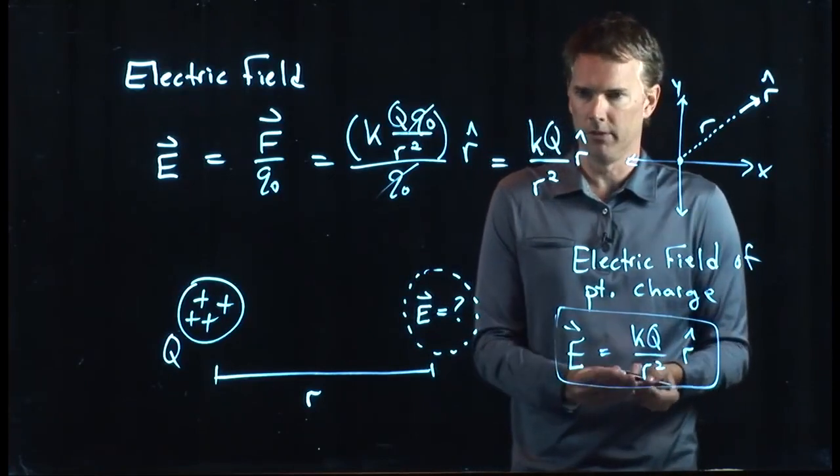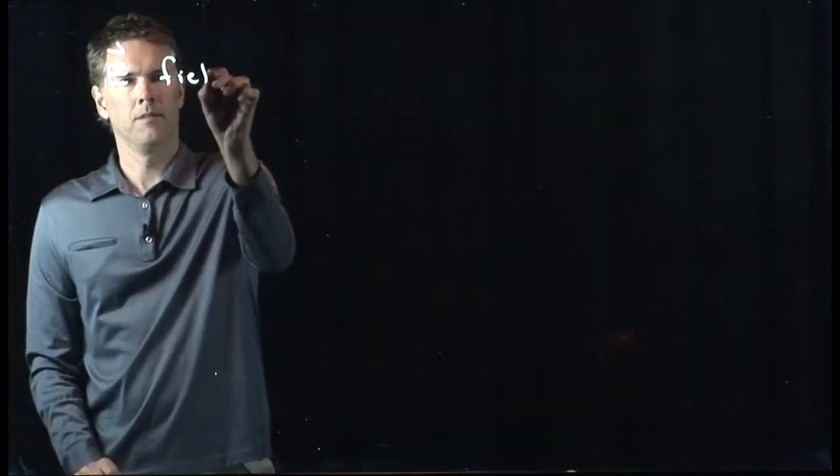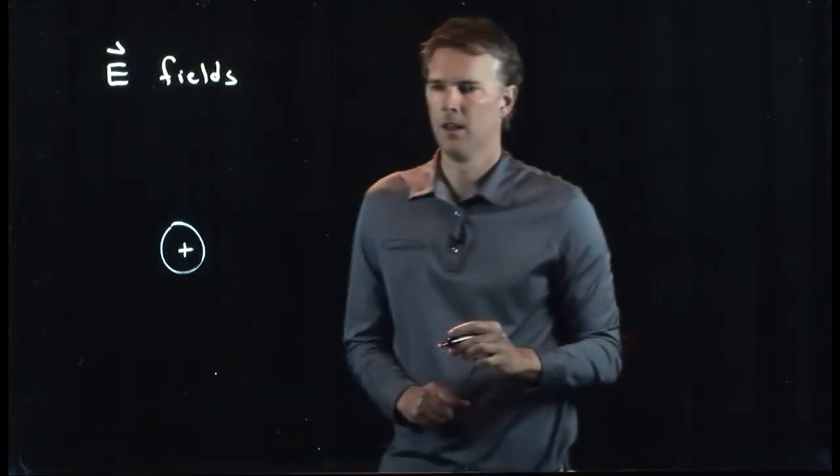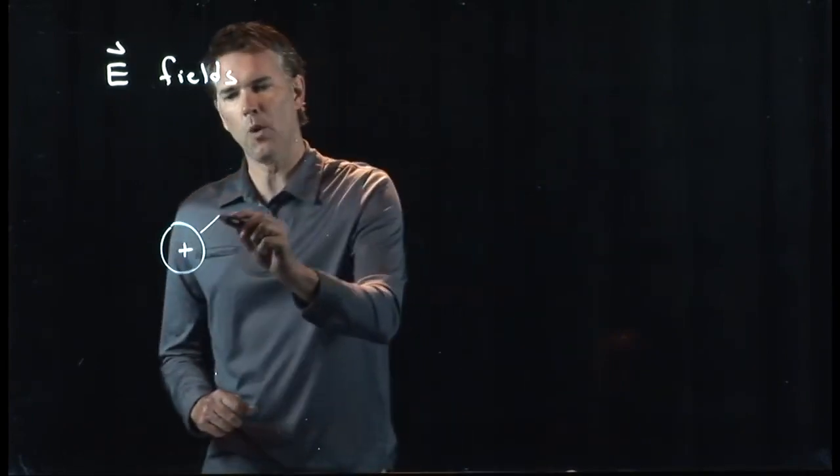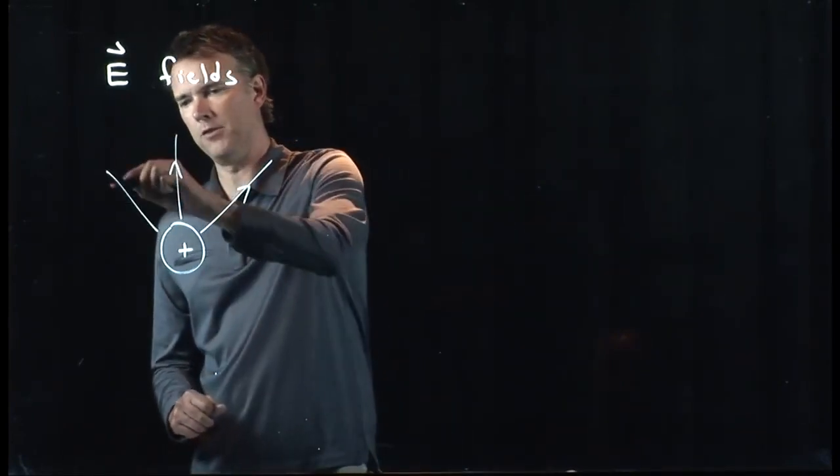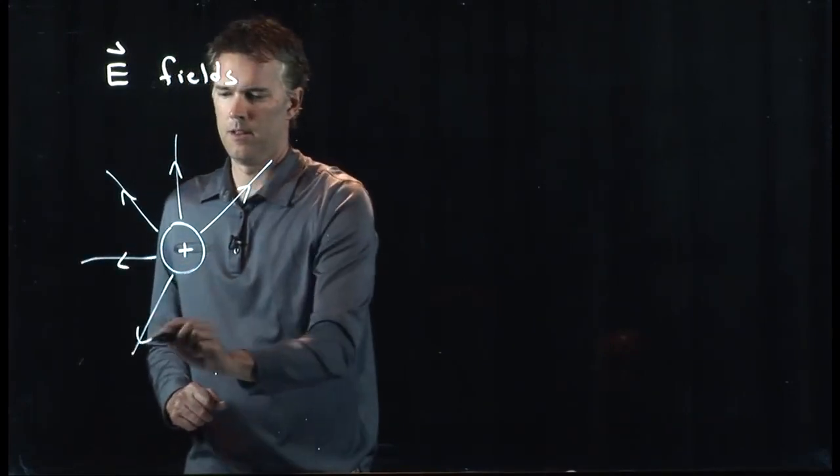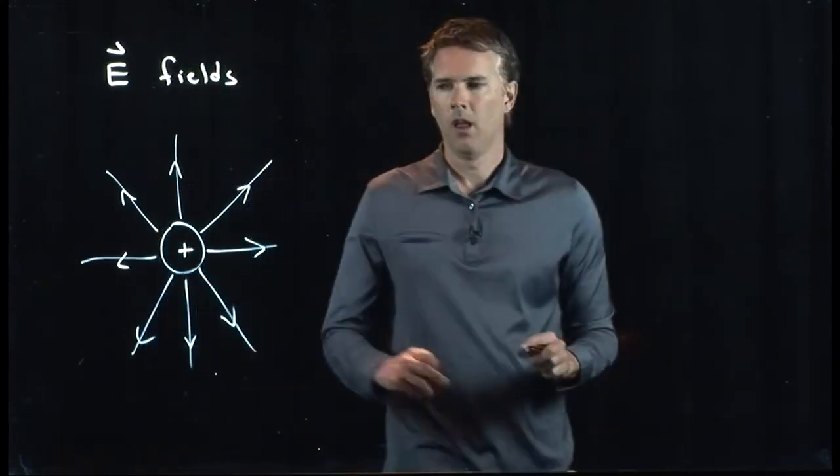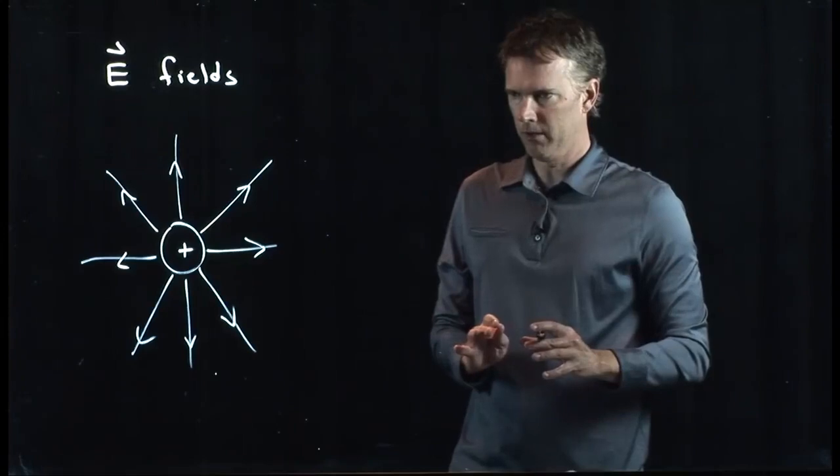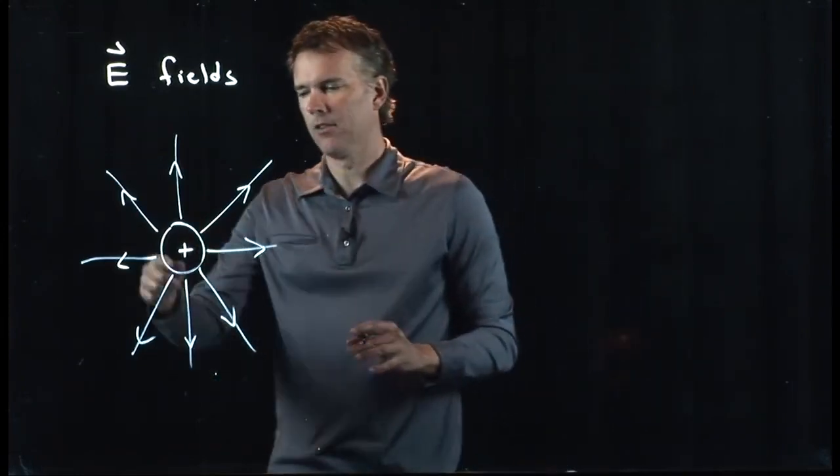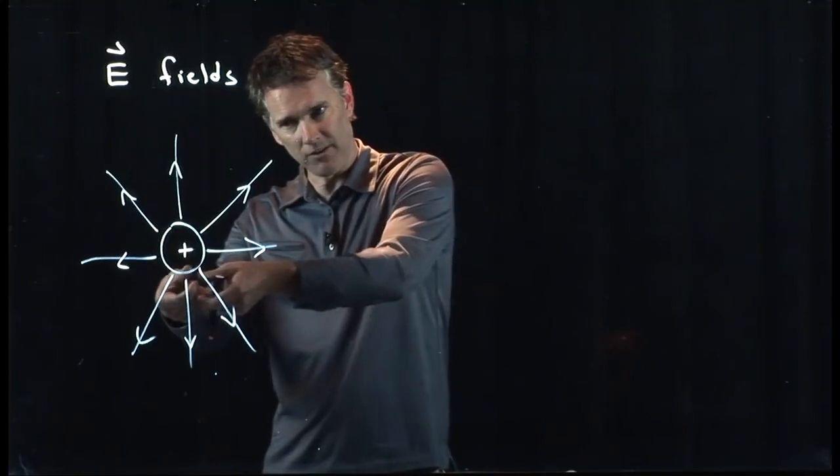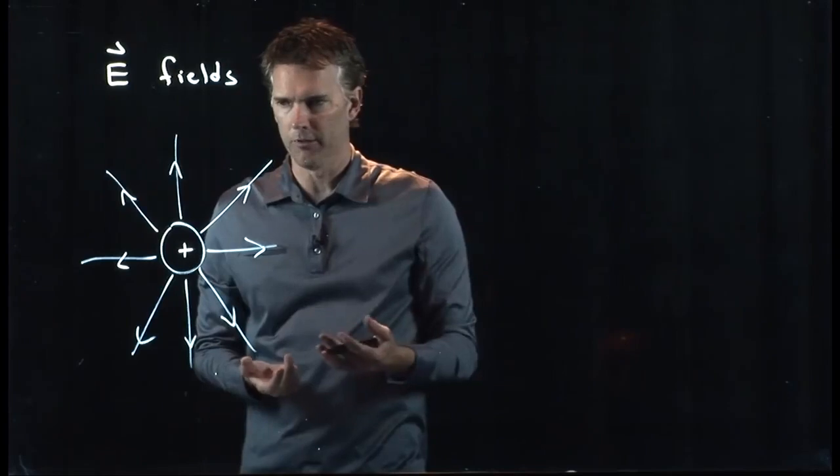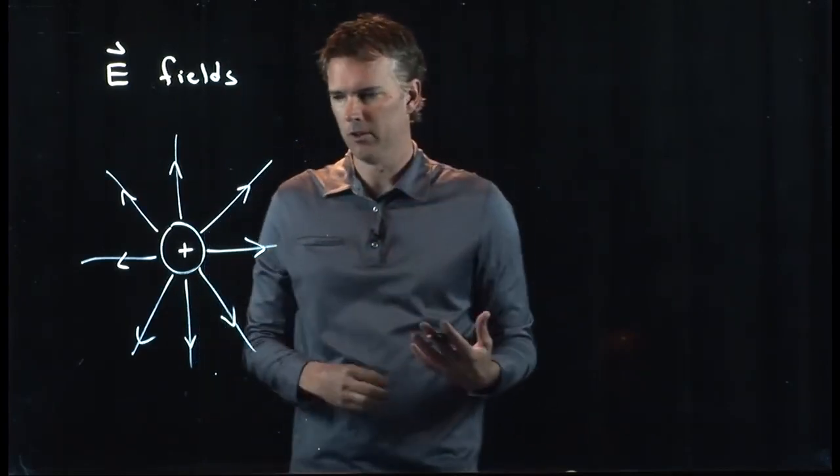All right. So let's draw some electric fields and just make sure we're all on the same page. If I have a positive charge, electric field lines go out from that positive charge. And if I draw it with continuous lines, like so, the arrows indicate the direction of the electric field. The lines indicate those lines of electric field. The density of those lines indicates the strength. Where the lines are tight together, electric field is strong. Where they are spread out, electric field is weak.